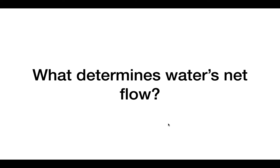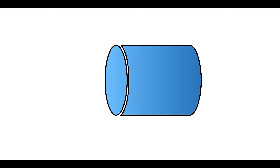So what determines water's net flow? To understand this, we're going to do two scenarios. In the first scenario, we have a closed tube, and inside the tube we have water. This water exerts a specific pressure that is equal at all points in all directions. We can call this pressure PI, or interior pressure. There's also a pressure outside the tube that goes against the pressure inside the tube, and we can call this P out.